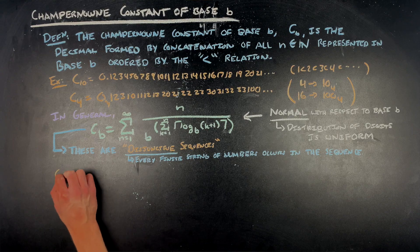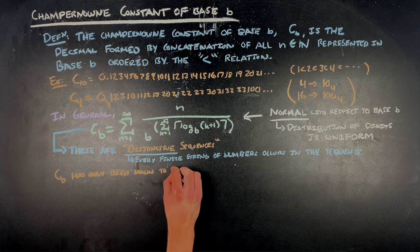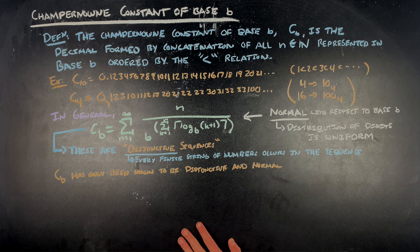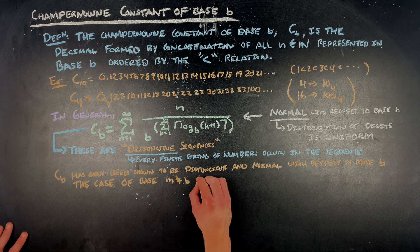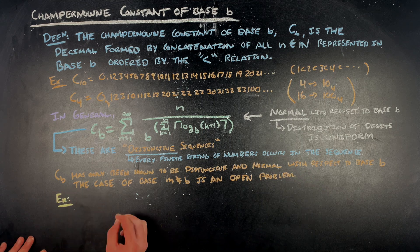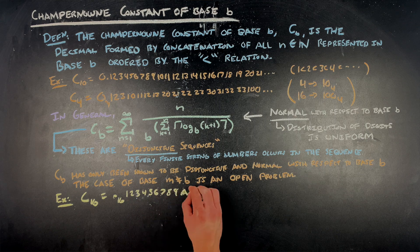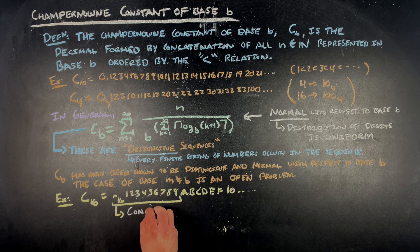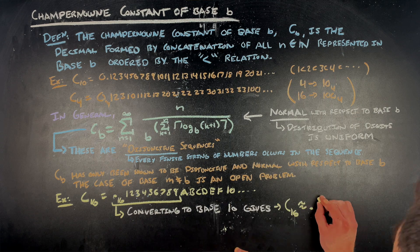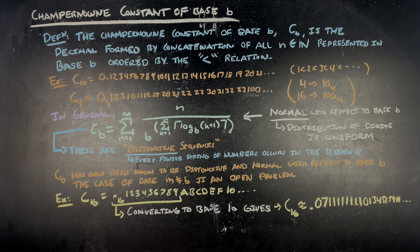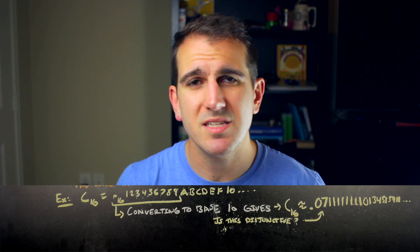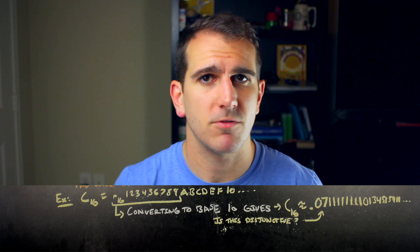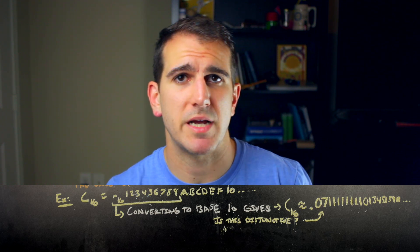Getting back to the C sub b constants: it has only been shown that they are normal and disjunctive with respect to their given base b. Whether or not these sequences remain disjunctive when you change the base is an open problem. To flesh that out a bit: if you were to look at the first nine digits of the hexadecimal Champernowne constant C16 and convert it to base 10, we would get something around 0.071111111110134515911. So the naive attempt of just converting parts of the number doesn't produce an immediate argument for whether or not it would be disjunctive with respect to a different base.